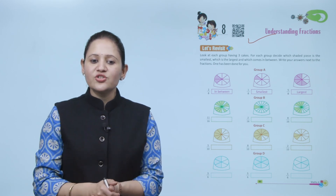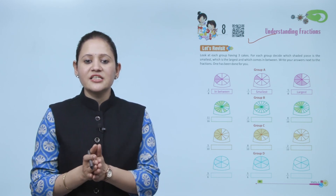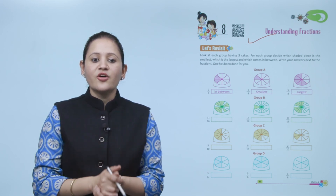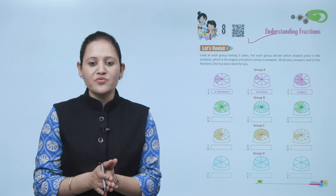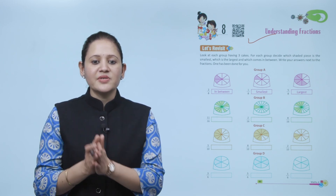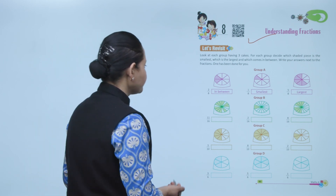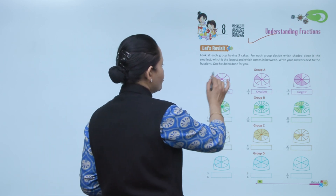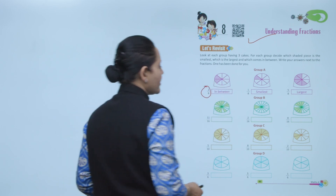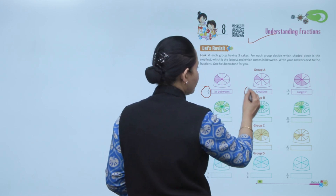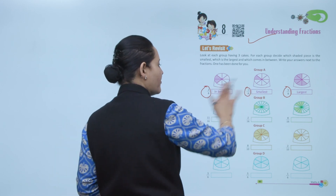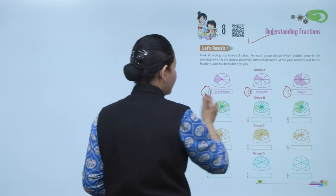Let's revisit. Look at each group having three cakes. For each group, decide which shaded piece is the smallest, which is the largest, and which comes in between. Write your answer next to the fraction — one has been done for you. Here, total 8 equal parts, 2 are shaded, so the fraction is 2 by 8. The fraction 1 by 8 is the smallest and 5 by 8 is the largest.